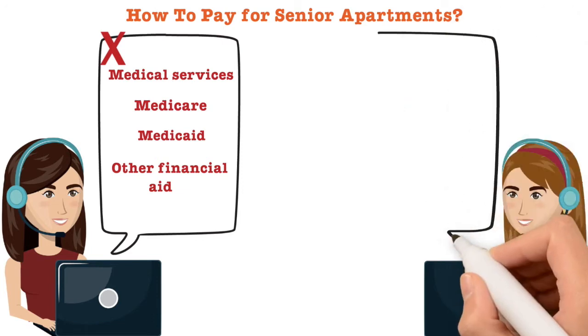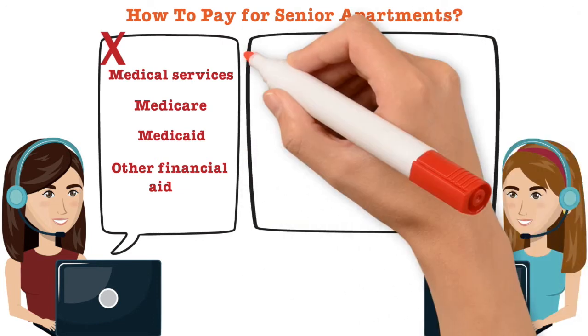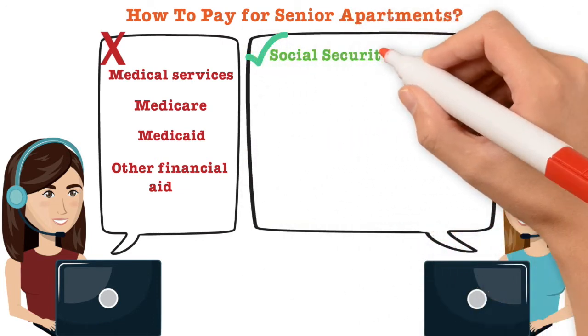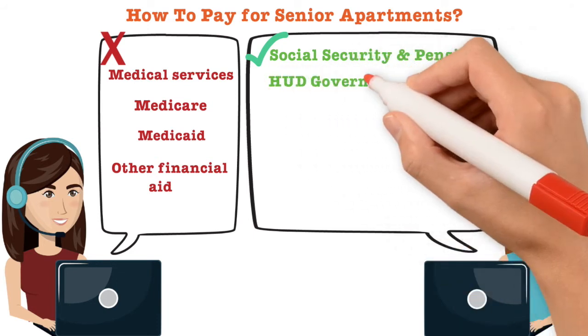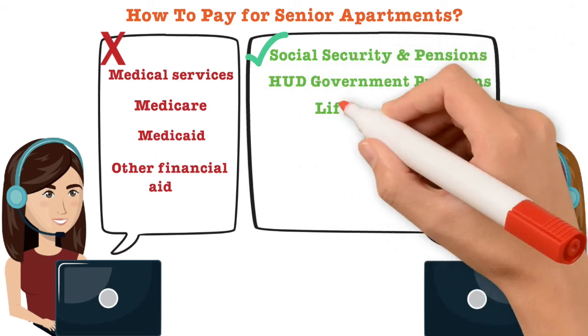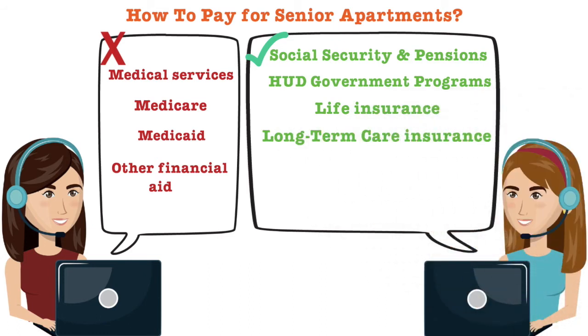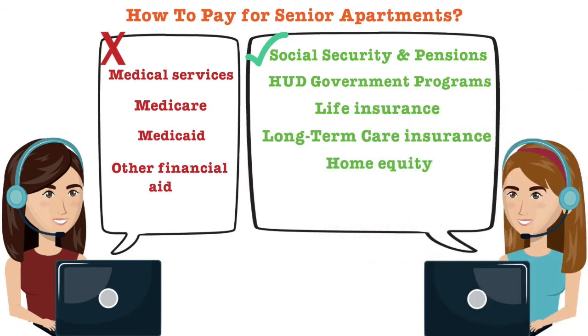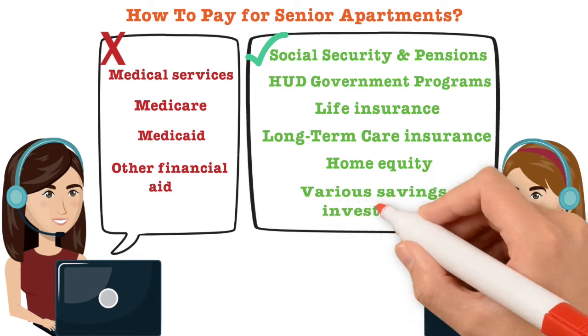Instead, seniors must pay by a combination of other methods such as Social Security and pensions, HUD government programs, life insurance, long-term care insurance, home equity, various savings and investments.